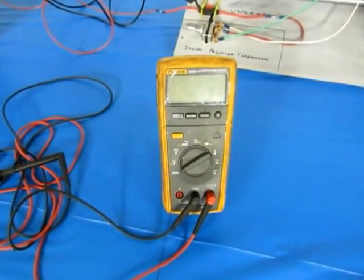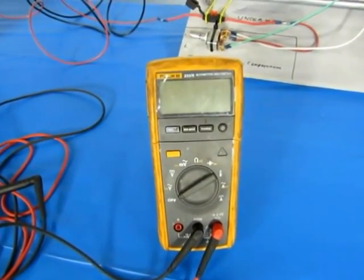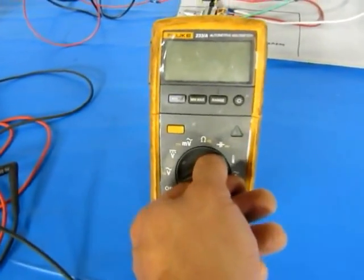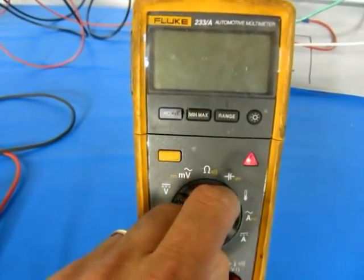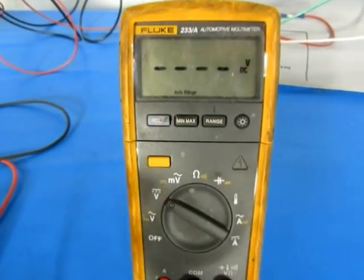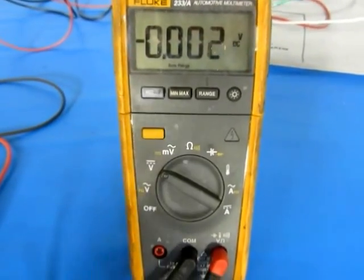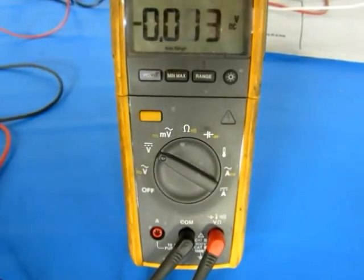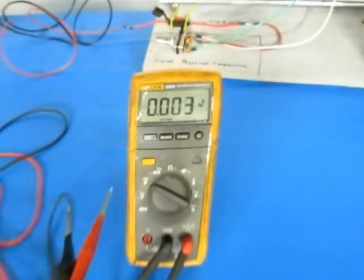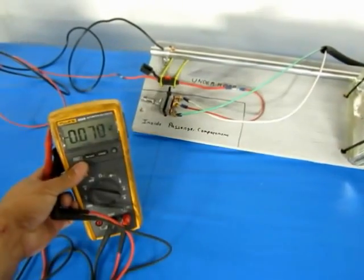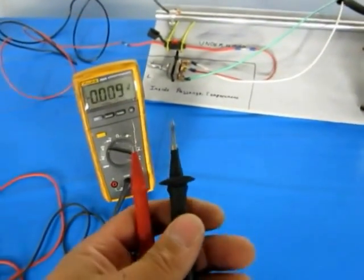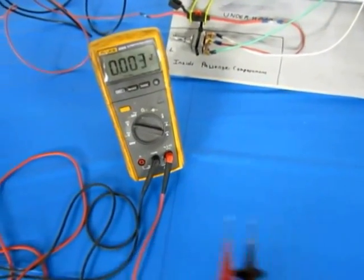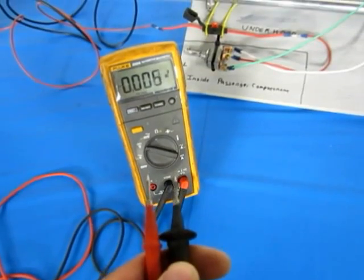I'd like to first talk about DVOM, which is Digital Volt Ohm Meter. Using any meter, no matter what type you use, this is a Fluke 233, it's a good meter, but you don't have to have the most expensive meter out there to use. The most important thing that you have to remember is that whatever is between the leads, your positive and negative leads here, is what the meter is displaying.